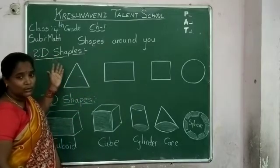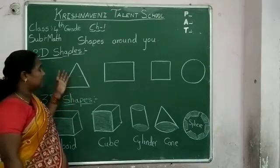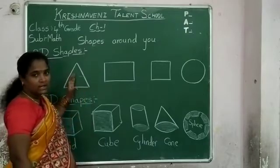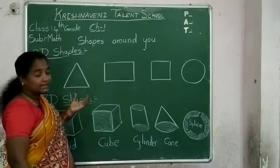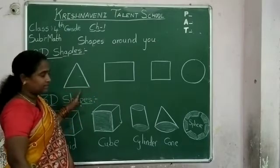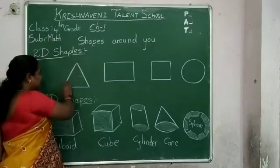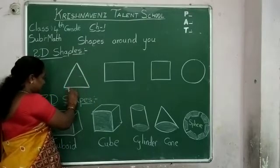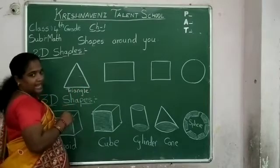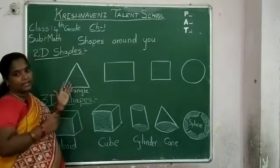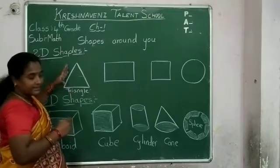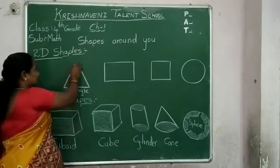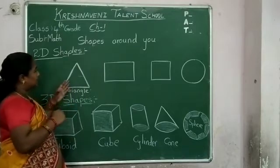How do I identify — is it a 2D shape or 3D shape? Which shapes have only two dimensions? They are called 2D shapes. Which objects have three dimensions? They are called 3D shapes. Here, four basic 2D shapes are given. So what are they? Triangle. What is a triangle? A triangle is a closed figure bounded by three line segments. These three line segments are called 3 sides — the 3 sides of a triangle.